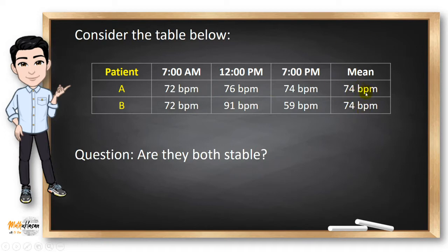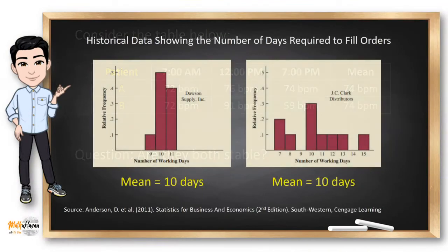Does that mean they are both stable? No, because we need to observe their difference in variability. Notice that the pulse rate of patient P fluctuates widely, whereas patient A's pulse rate is stable.